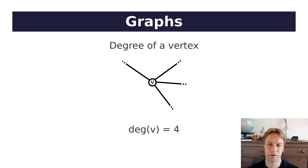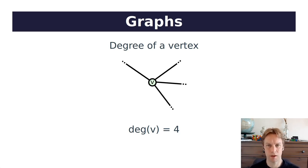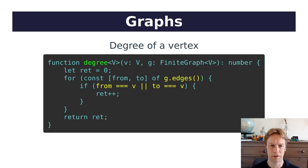Let's talk about the degree of a vertex. Here's a vertex in the middle with some edges coming out of it. The degree of a vertex is the number of edges coming out of it. In this case, the degree of vertex v is 4. To implement this in code, you loop through all the edges, and if an edge either goes into or comes out of our vertex, you add 1 to the degree. Any edge that touches v increases the count, and that's the degree of the vertex.